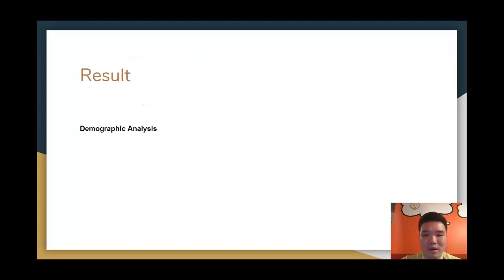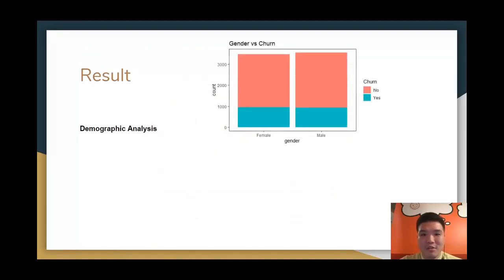Looking to demographic, gender versus churn, we can see from the graph, it's almost like having the same distributions between these two genders. Female have 3.5k, where male have 3.6k.